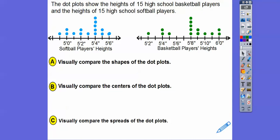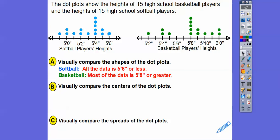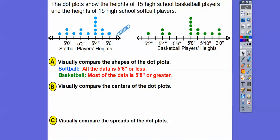Let's compare the shapes of these dot plots. For softball, all the data is 5'6" or less. For basketball players, most of the data is 5'8" or greater — they're kind of backwards from each other. The basketball team's shorter players are probably very good shooters or dribblers, and the taller ones are the centers who block everything down low.